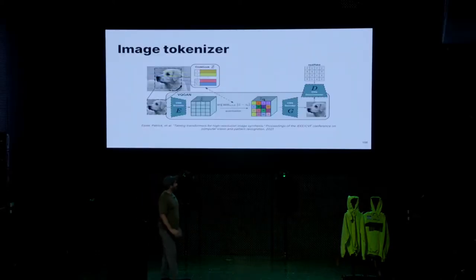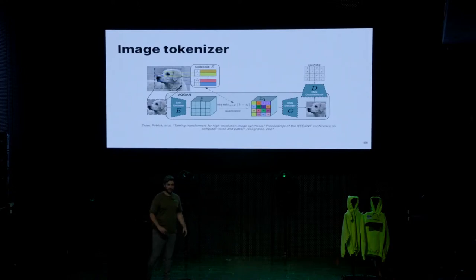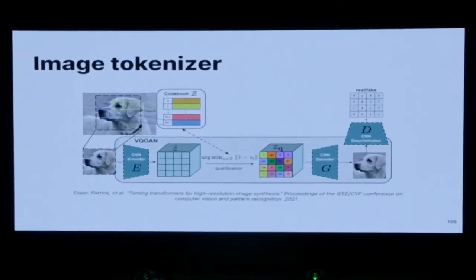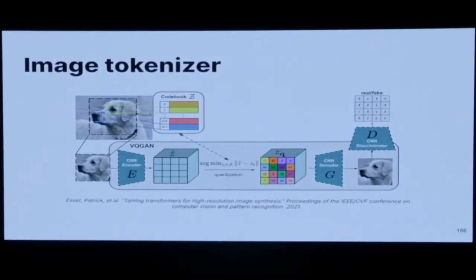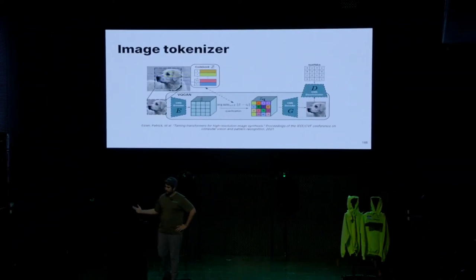An image tokenizer is basically a fancy image compressor — an ML image compressor that takes in images and compresses them into a set of tokens. A token is a fancy name for a discrete number, a number that can only take a small set of values from a dictionary. It encodes images with a lot of pixels into this set of discrete tokens, usually 128 to 512 tokens. With this tokenizer comes a detokenizer or image decoder that brings you back to image space. This model is trained with a GAN loss — a generative adversarial loss — and is usually referred to as a VQGAN.